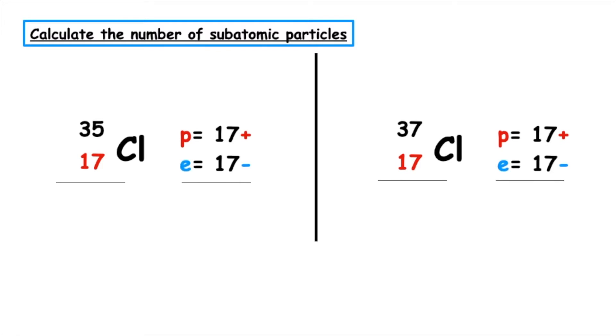As there is no positive or negative on the nucleic notation, they're classed as atoms, so they have 17 electrons. And if we calculate the number of neutrons, the first one has 18 neutrons and the second has 20 neutrons.